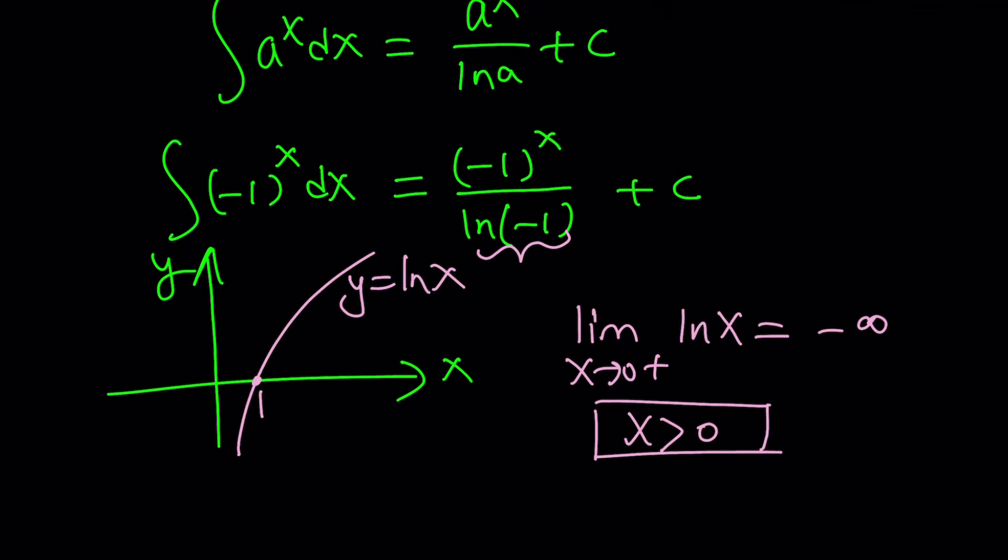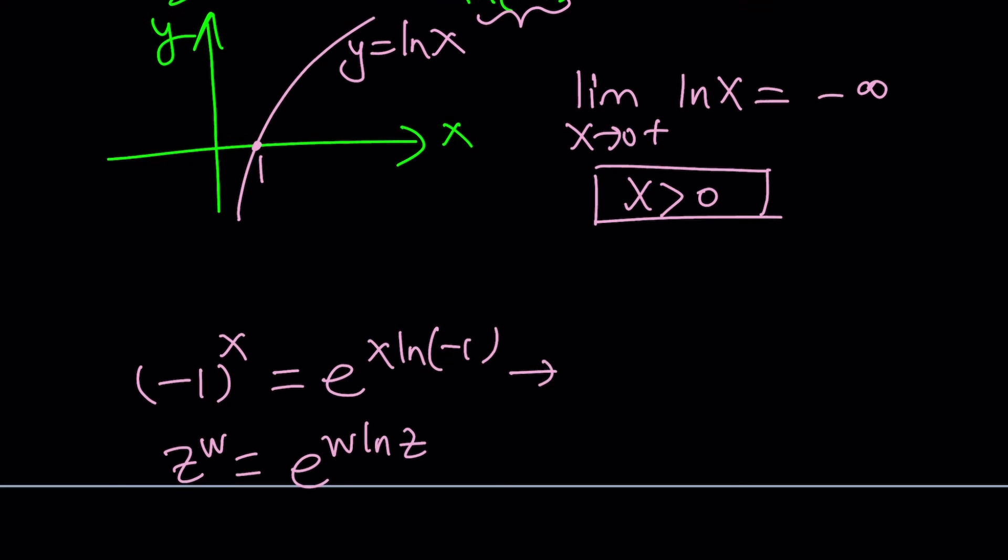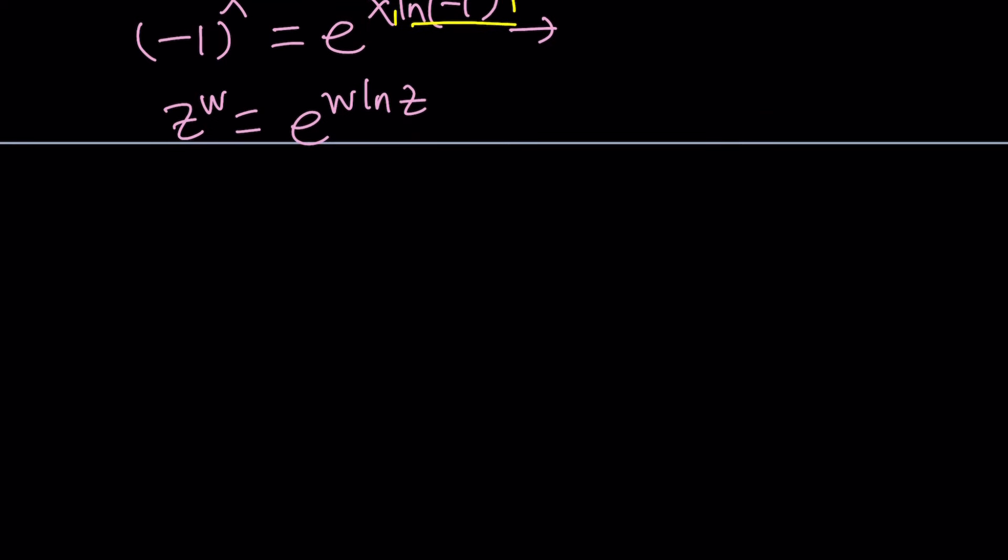And again, if you go back here, ln negative 1 comes up. And when you differentiate this or integrate this, you're going to end up with the same thing because you need to divide by ln negative 1. Remember, if you have something like e to the power of 2x and you're trying to integrate it, it would give you e to the 2x, but then you have to divide by 2, which is the coefficient of x. In this case, this happens to be the coefficient that's why you're going to divide.